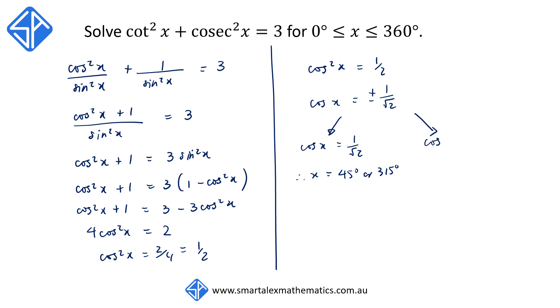If cos x is equal to negative 1 on root 2 we're going to get answers in the second and the third quadrant which means x would be equal to 135 degrees or 225 degrees.